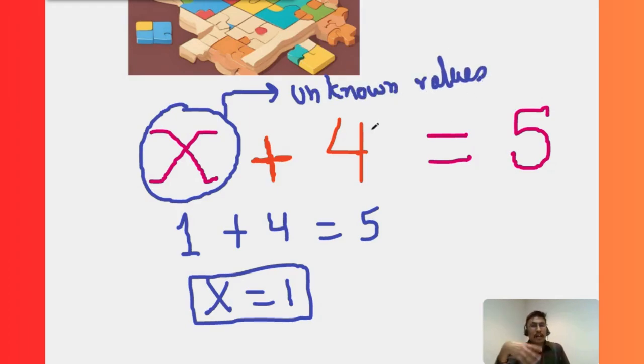While the numbers, normal numbers like 4 and 5 here, these are called the constant terms.